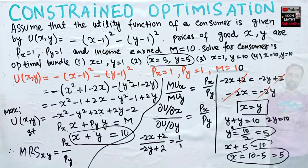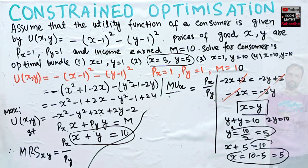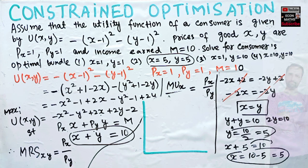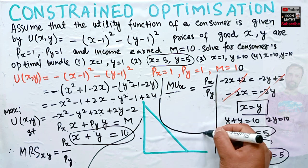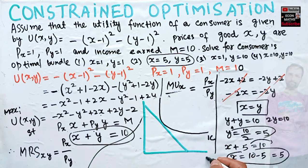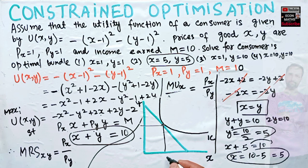Graphically, let us draw the budget constraint and the indifference curve. The tangency condition means our indifference curve is tangent to the budget line at the optimal point. At that point, units of x = 5 and units of y = 5, and MRS equals the ratio of the prices. I hope this video was clear. Thank you.